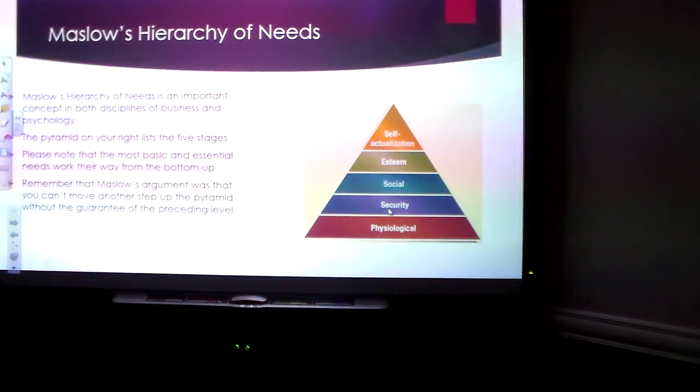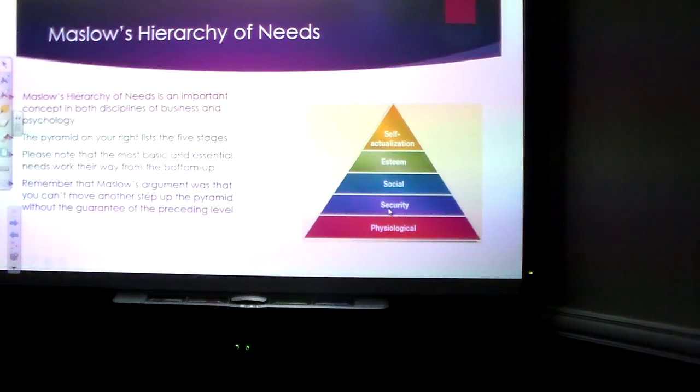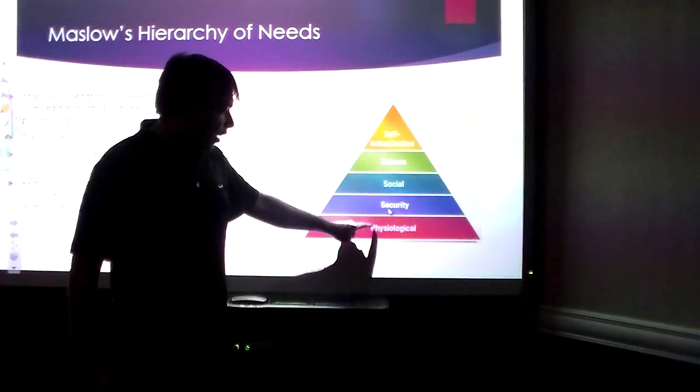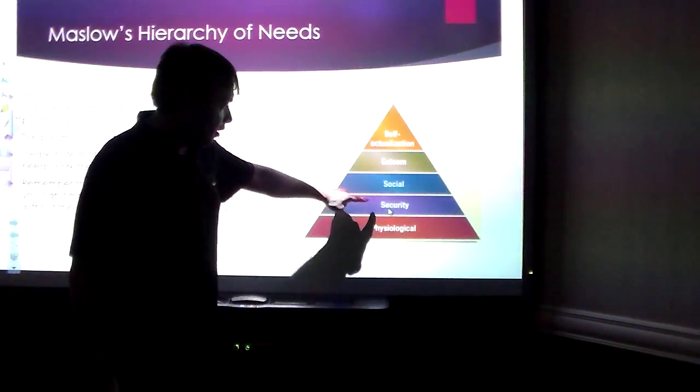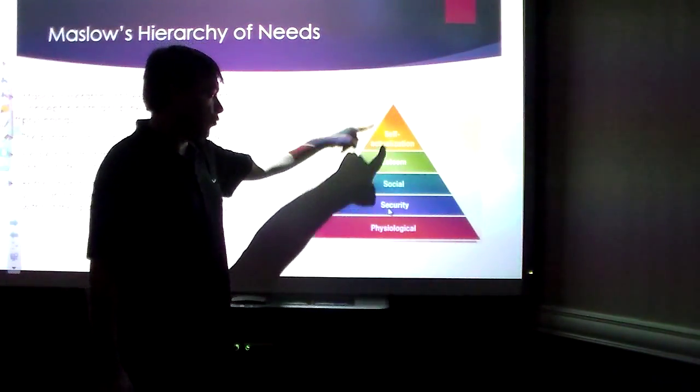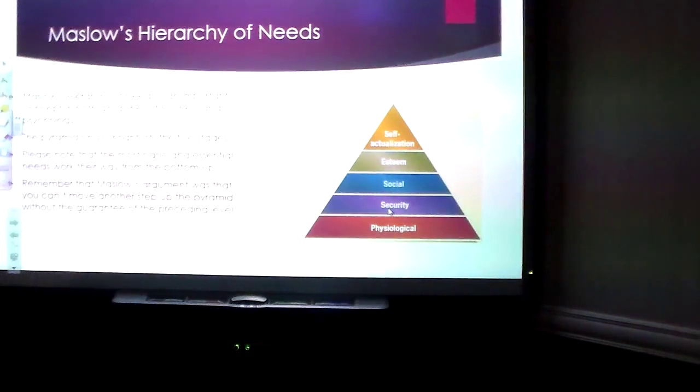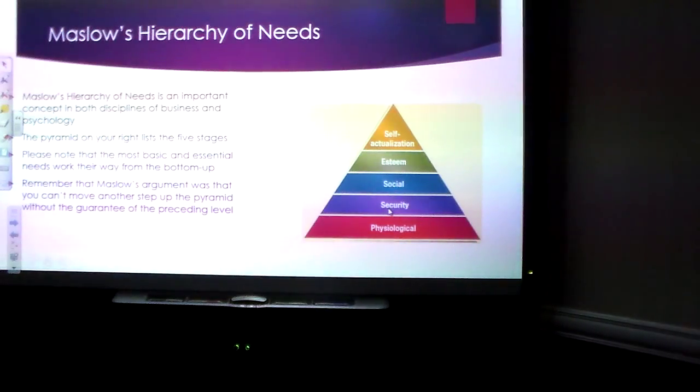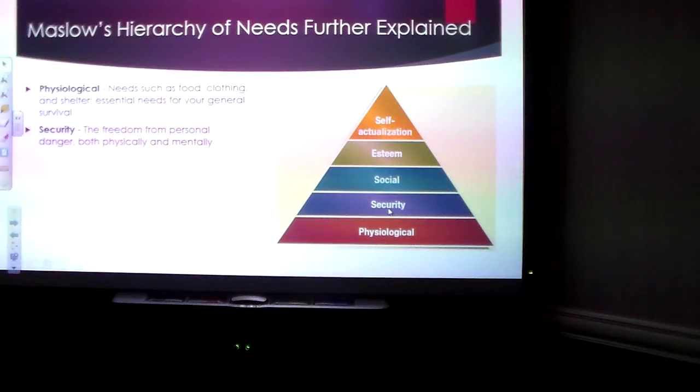It's important in business and psychology. The stages are listed on your right, but I want you to know that it's not a top-down, it's a bottom-up hierarchy. You have to have physiological needs to be able to get security, security to get social, social to get esteem, and esteem to get self-actualization. Maslow's argument was you can't move another step up the pyramid without the guarantee of the preceding level.